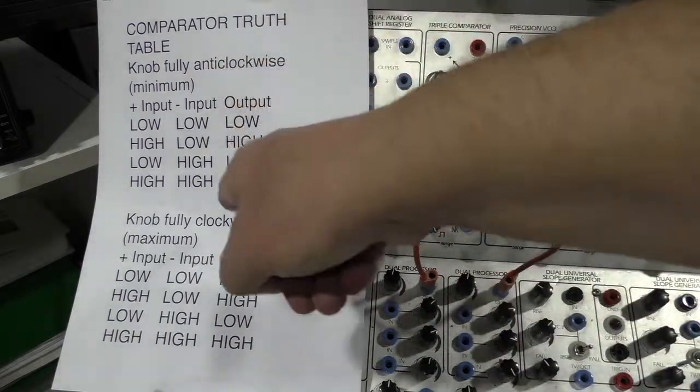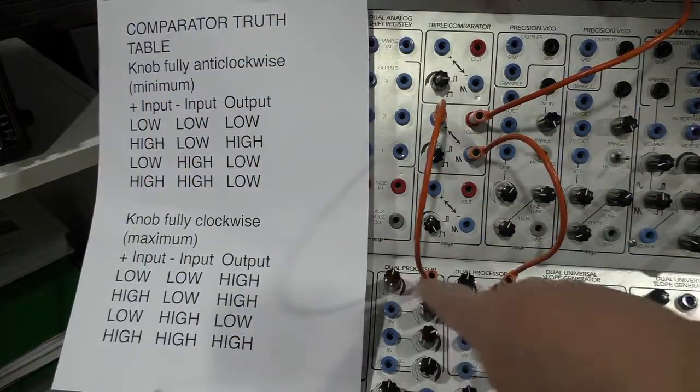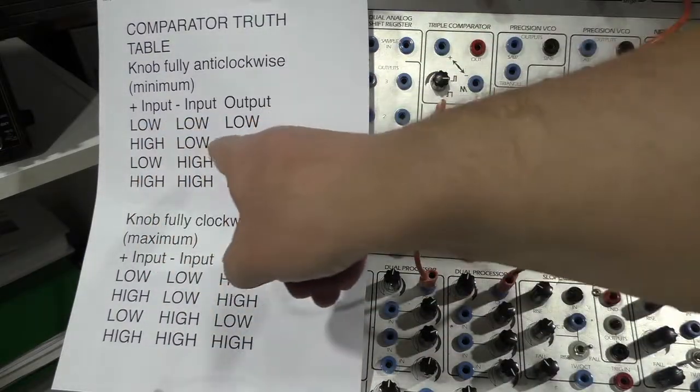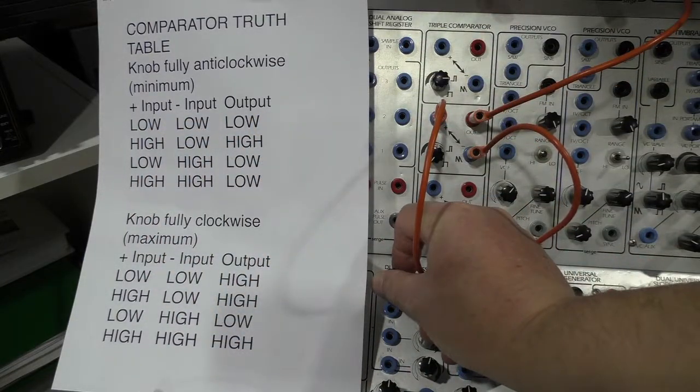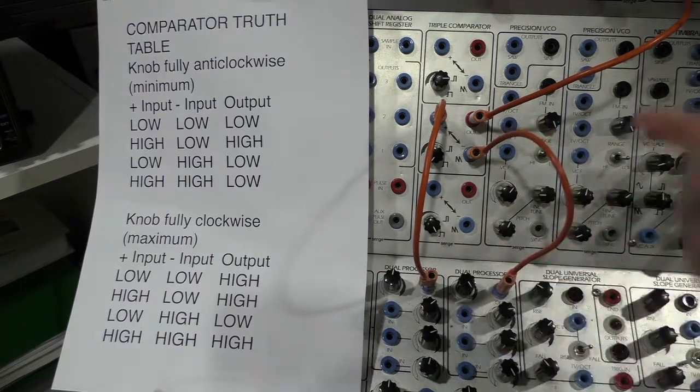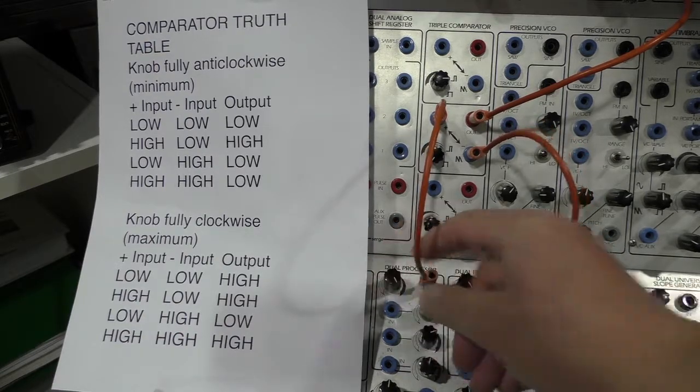So we have this truth table, which is low and low produces low on the output, high and low produces high, low and high produces low, and high and high also produces low.